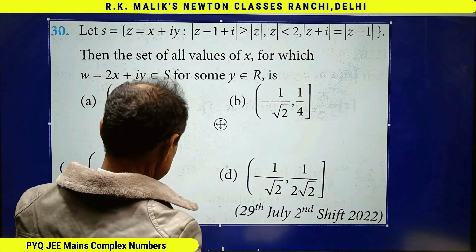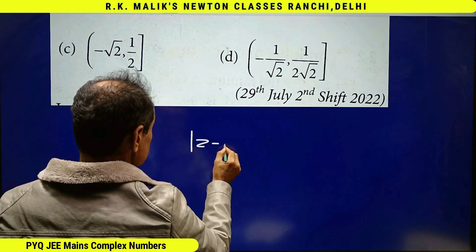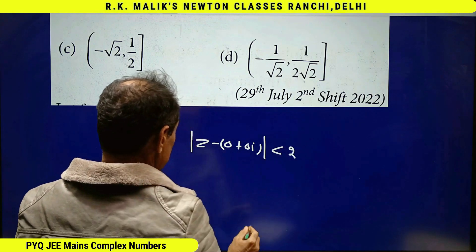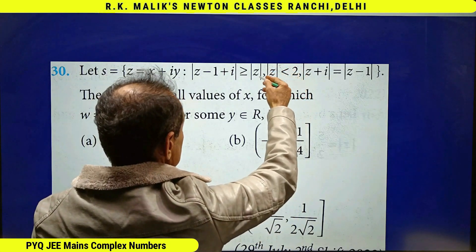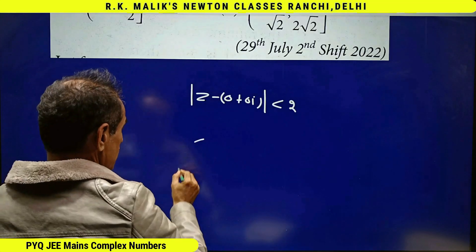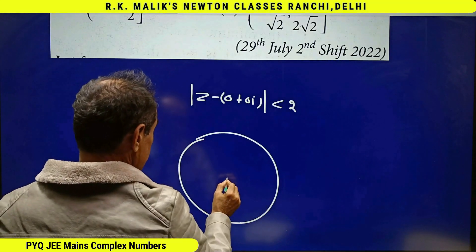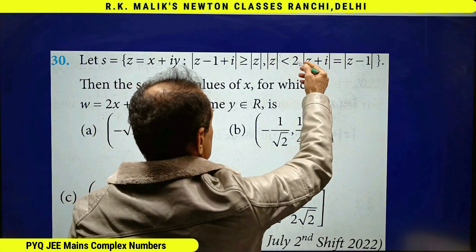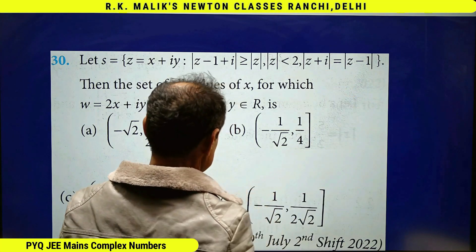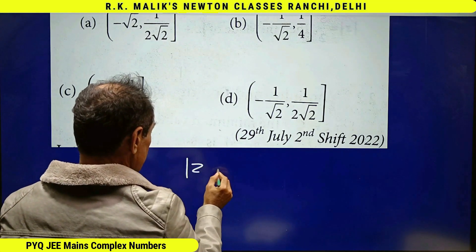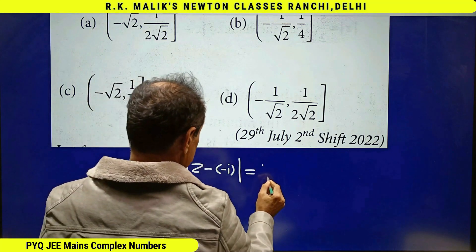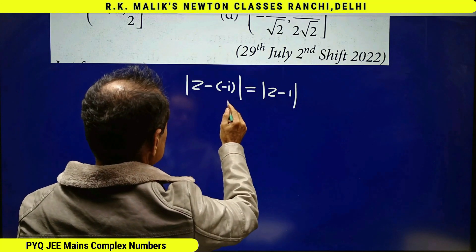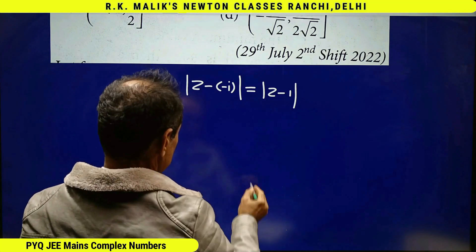Mod z less than 2 means mod of z minus 0 is less than 2. That is, all complex numbers satisfying this condition lie inside a circle with center (0, 0) and radius 2. The third condition, mod of z minus i equals mod of z minus 1, means the distance of z from minus i equals the distance of z from 1.